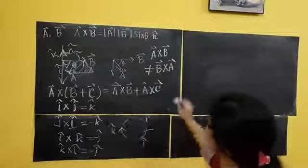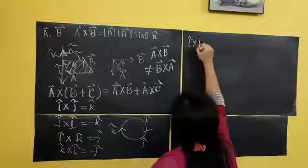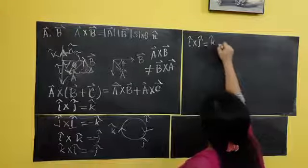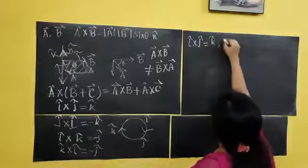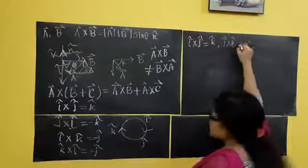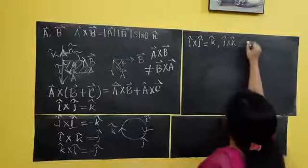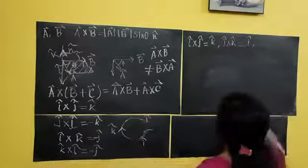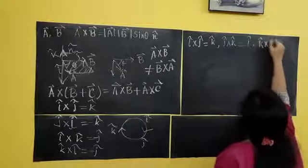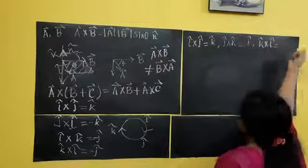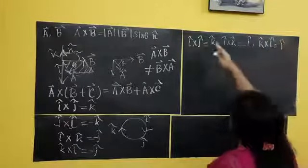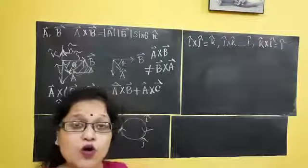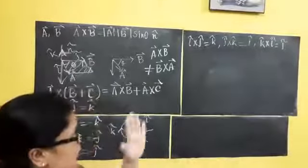So to summarize the unit vector cross products: I cross J equals K cap, J cross K equals I cap, K cross I equals J cap. And the reverse of each gives a minus sign.